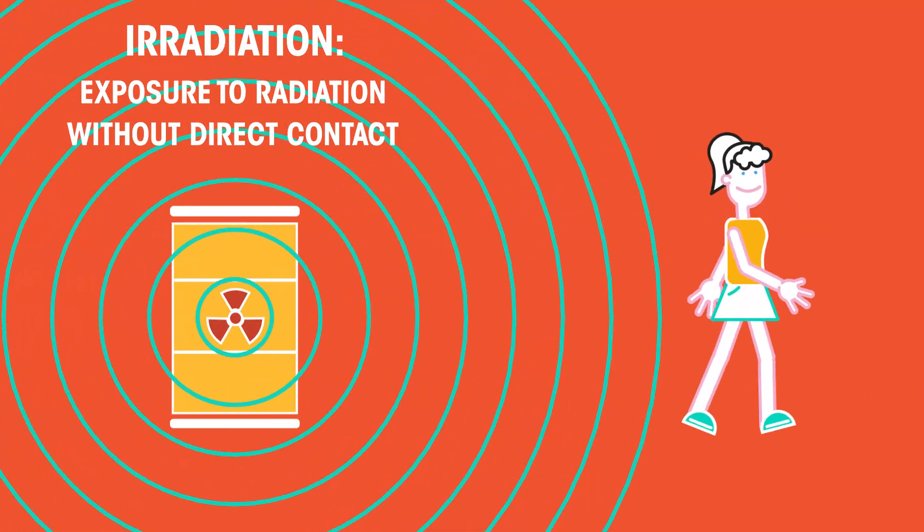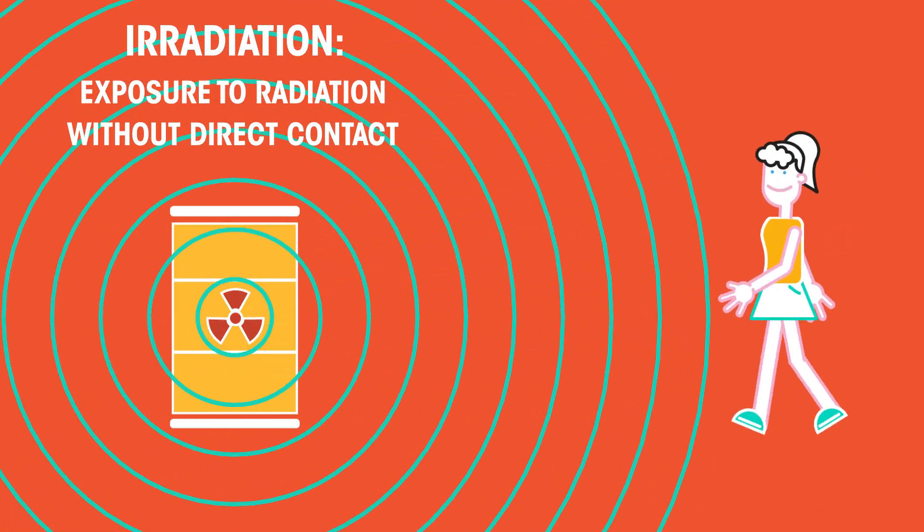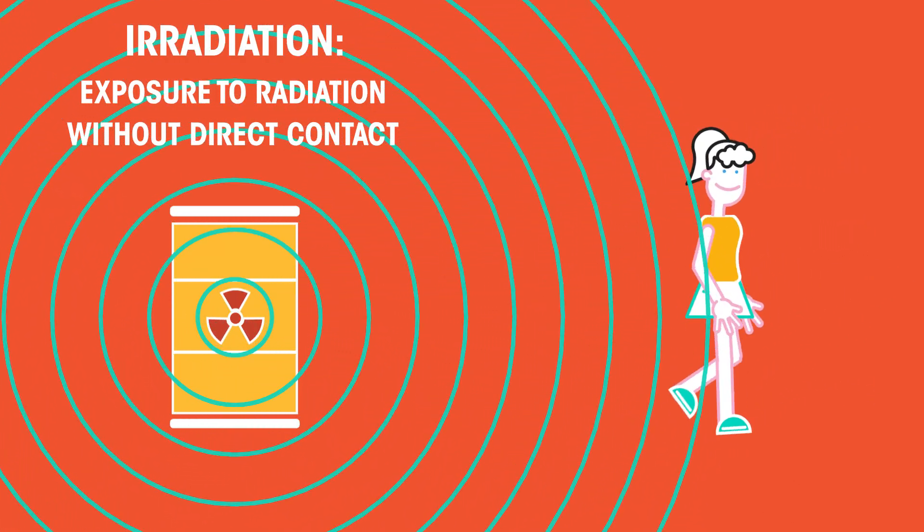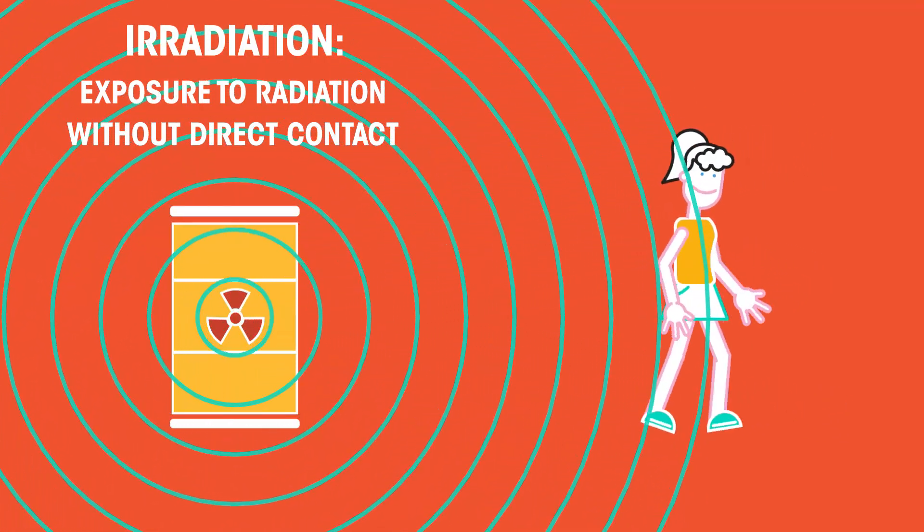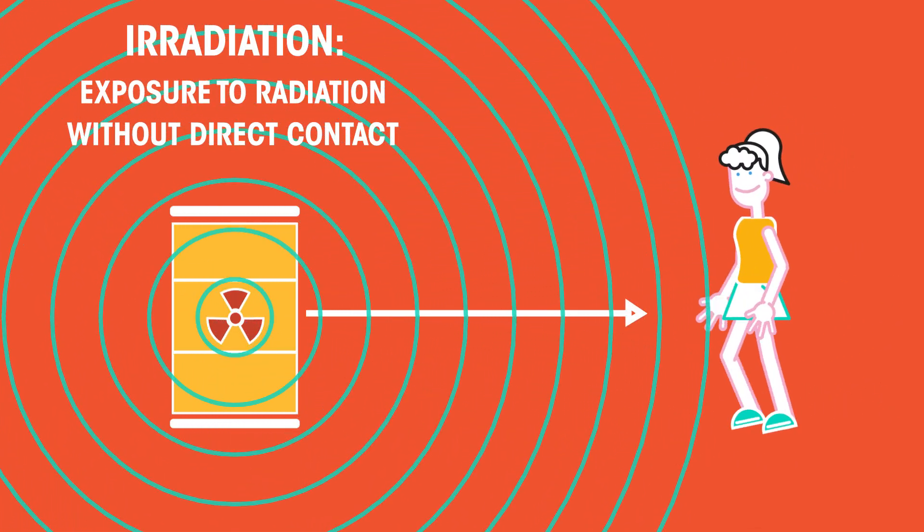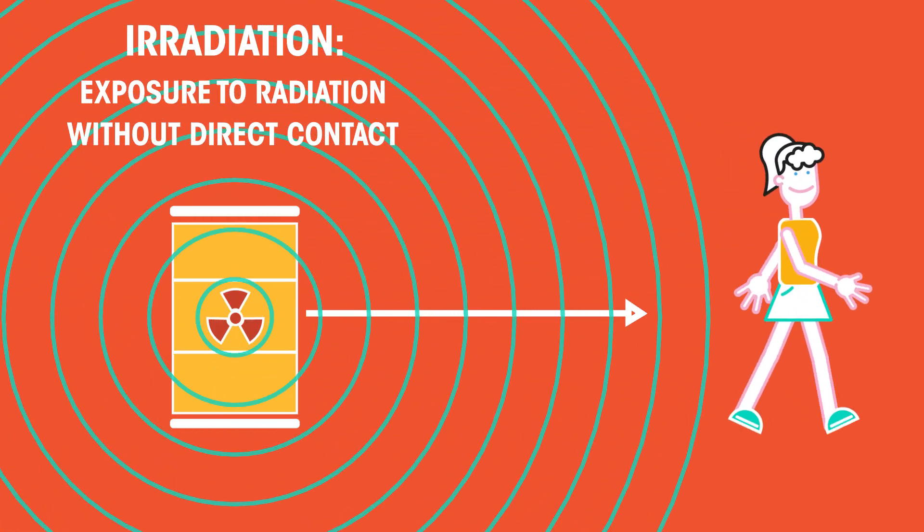Irradiation is when a person or object is exposed to radiation without coming into direct contact with the radioactive source. The person doesn't make direct contact with the radioactive barrel, but since irradiation can happen at a distance, the person is still at risk.